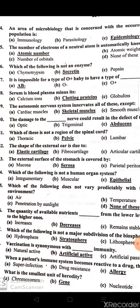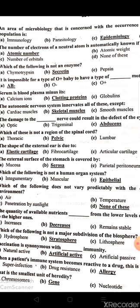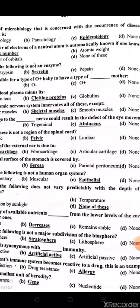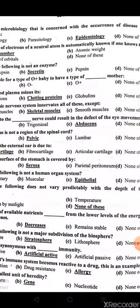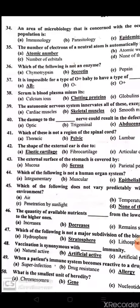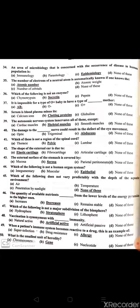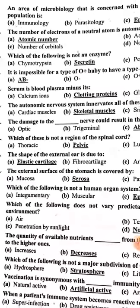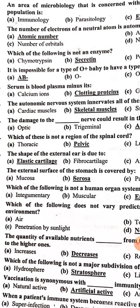The number of electrons of a neutral atom is automatically known if one knows the atomic number. Which of the following is not an enzyme? Secretin is not an enzyme.